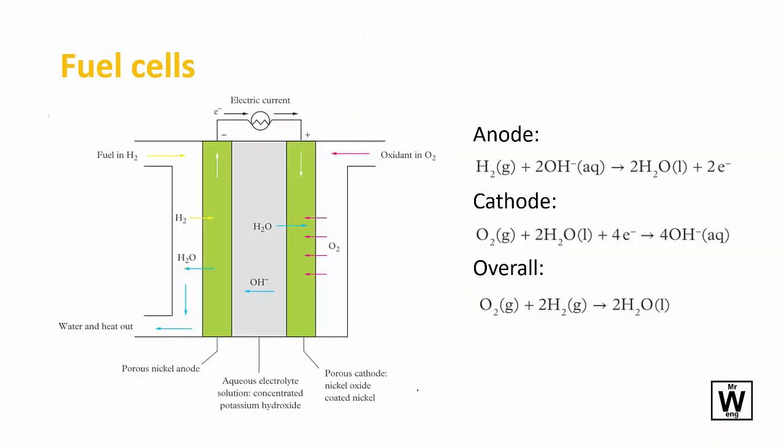Now to a galvanic cell of high importance because it produces no carbon dioxide emissions and produces electricity, and the hydrogen gas potentially can be produced in a green fashion.